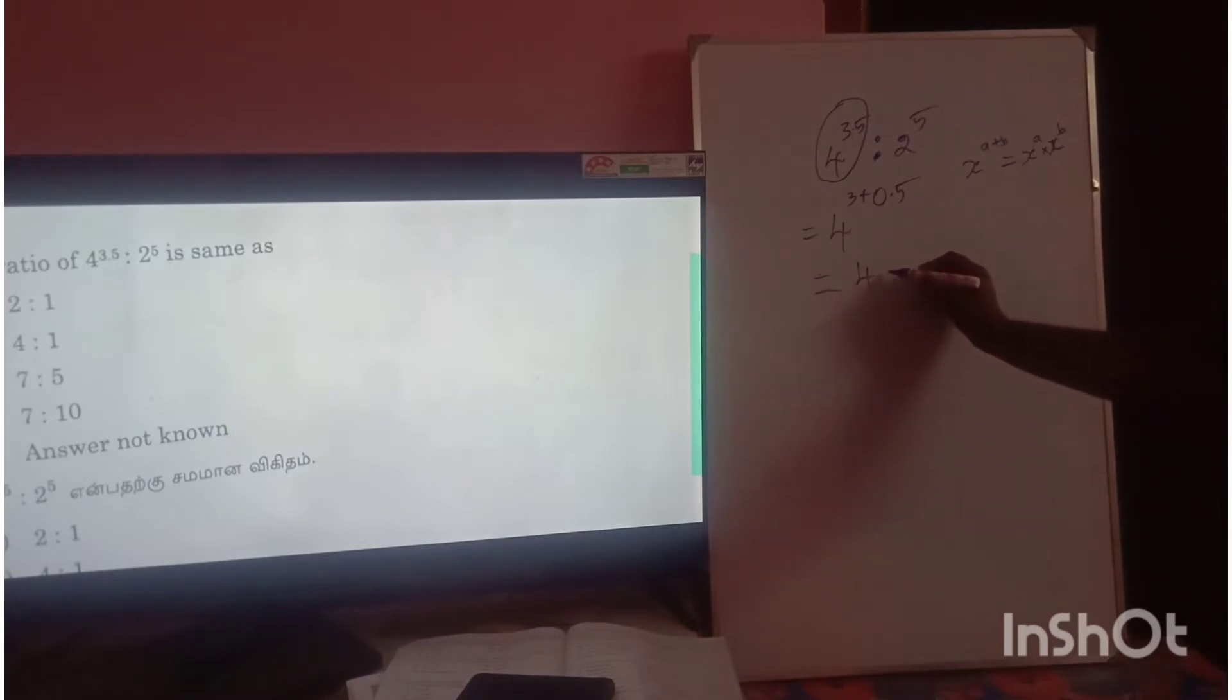4^3.5 equals 4^3 times 4^0.5. Since 0.5 equals 1/2, this is 4^3 times 4^(1/2). And 4^(1/2) equals 2.